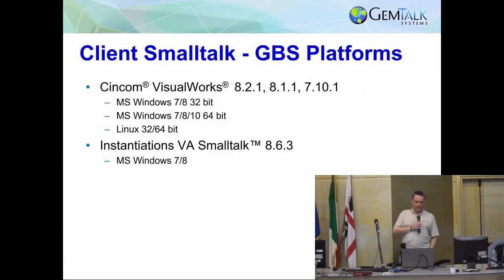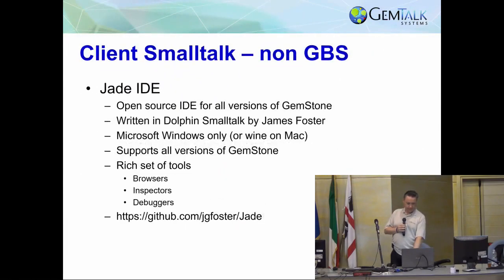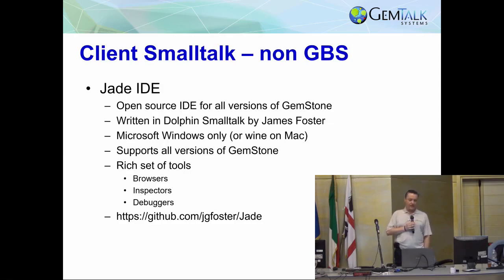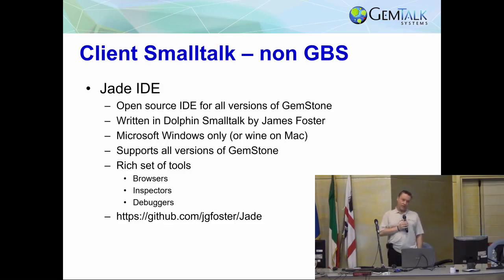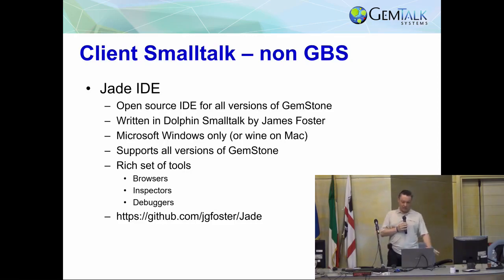The client Smalltalk platforms: VisualWorks and VA are supported platforms today. We also have a few non-GemBuilder Smalltalk client platforms that are open source. One of them is the Jade IDE, written and maintained by James Foster. This is done in Dolphin Smalltalk. It has all the basics you need to interface with GemStone: browsers, inspectors, debuggers — it's actually quite a nice set of tools. It runs on Windows only, which is a Dolphin restriction, but I've been told it runs on Wine on the Mac fairly decently as well. The other nice thing about Jade is it supports all versions of GemStone — they package the shared libraries for every version of GemStone with Jade, and when you log in, Jade figures out which version you have and loads the right library. It's very nice when you have multiple versions of GemStone running.